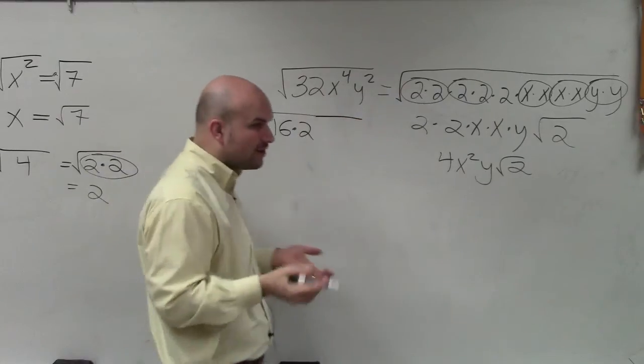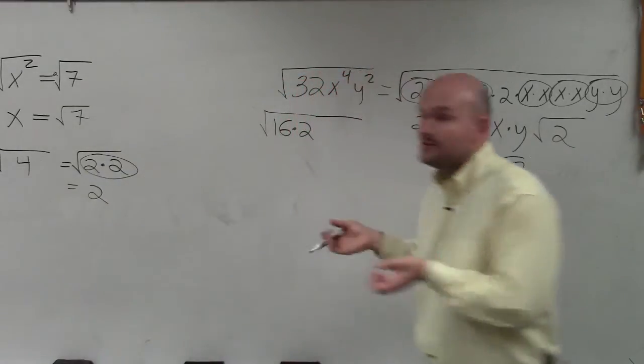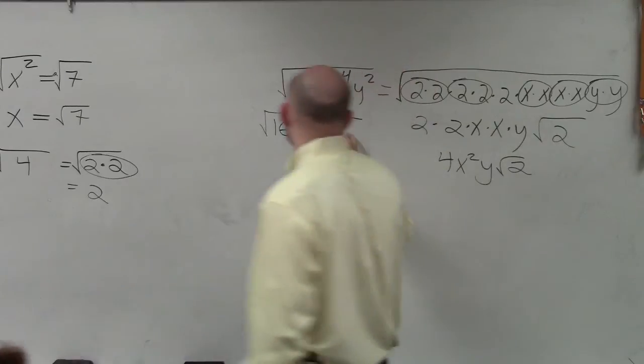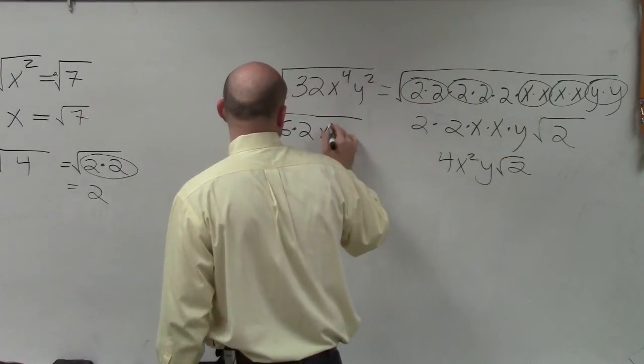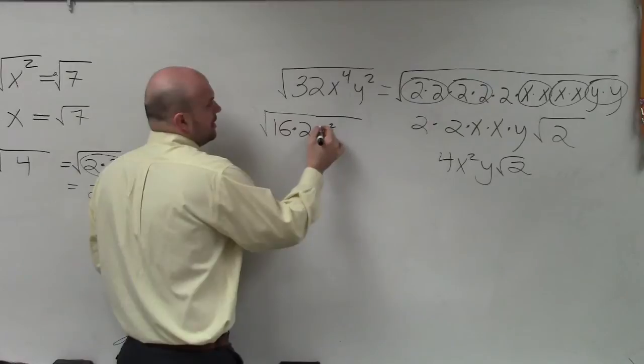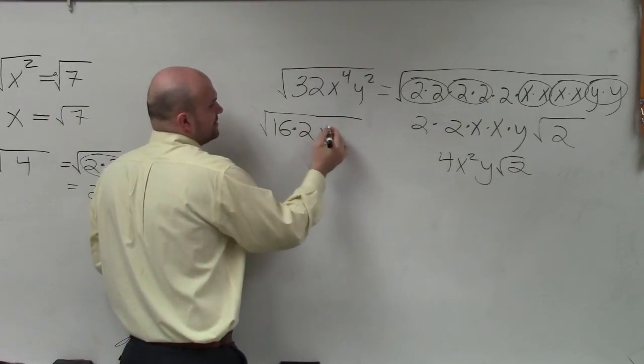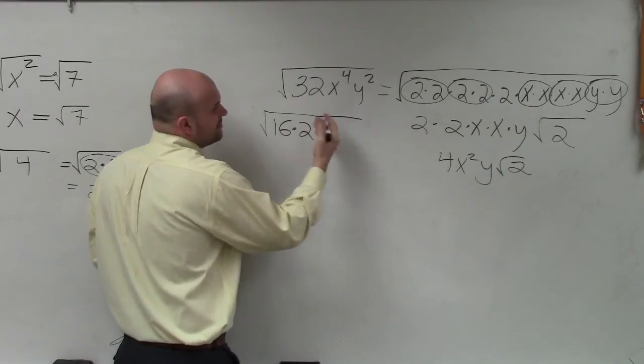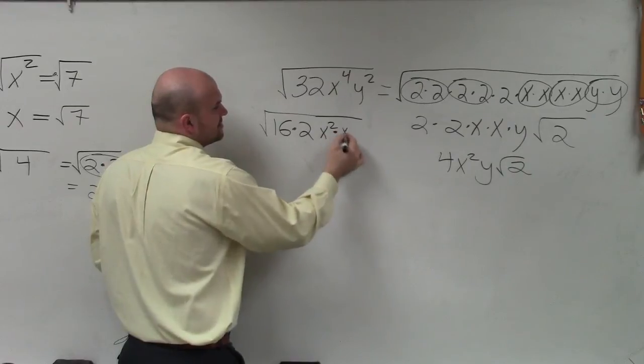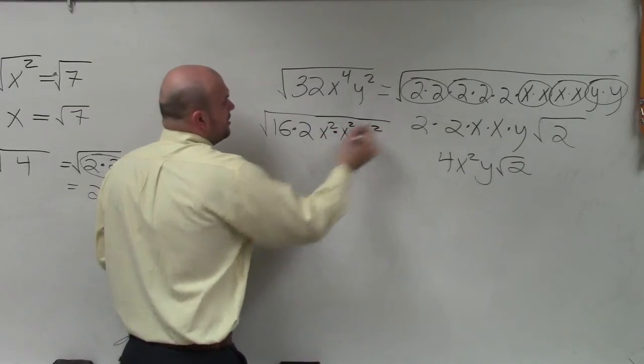And then x to the fourth, I can break down into terms we can take, which would be x squared. You can write it as x squared times x squared, times y squared.